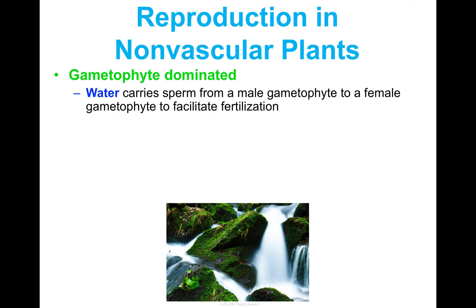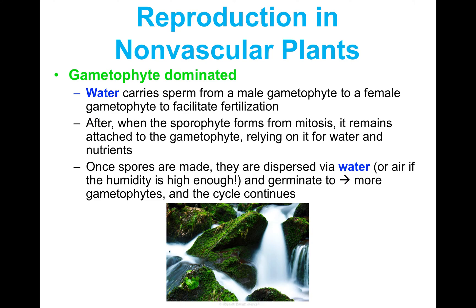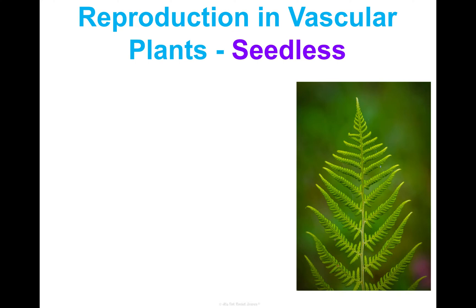Water is the facilitator — it's going to carry sperm from a male gametophyte to the female gametophyte to allow fertilization to happen. After the sporophyte forms via mitosis and we have this multicellular organism, it remains attached to the gametophyte, relying on it for water and nutrients. Once meiosis is done and spores are created, those are dispersed via water — or through the air if there's enough humidity — and they can germinate and yield even more gametophytes, keeping the cycle going.